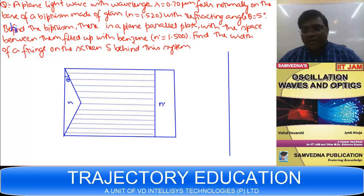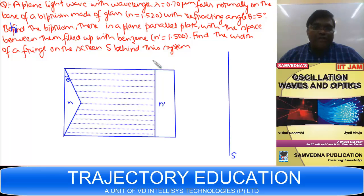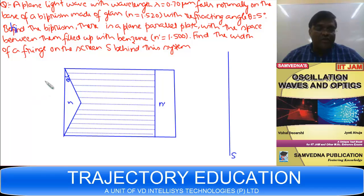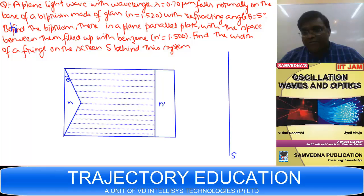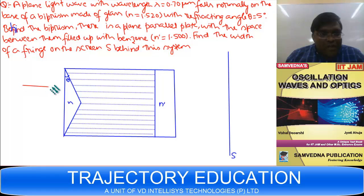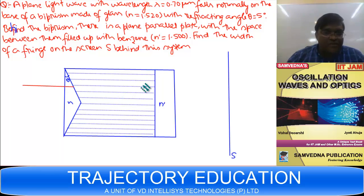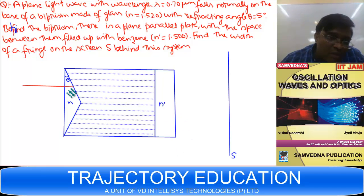We have to find the fringe width on the screen S behind the system. The ray coming on the biprism — since it is falling normally on the base — will go undeviated through the flat base portion, but will get refracted at the inclined surface.